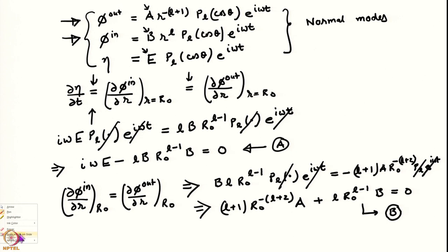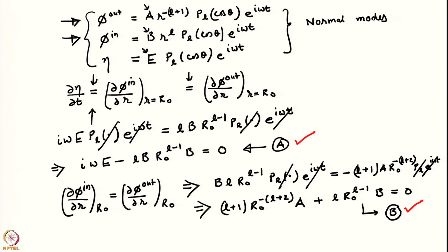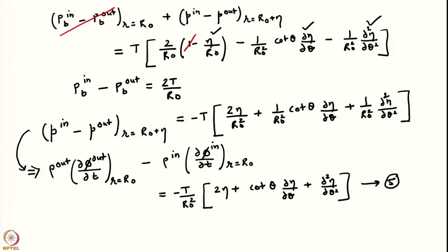I have equation A, which is homogeneous in the unknowns, and I have equation B. I need one more equation, and that has to come from the pressure boundary condition. I am going to rewrite equation 5 and use the expressions for phi_in, phi_out, eta, and d(eta) to obtain a homogeneous equation in the three unknowns from equation 5.